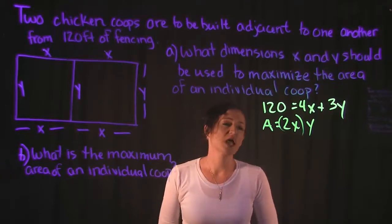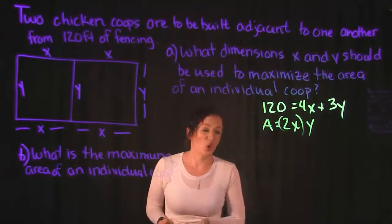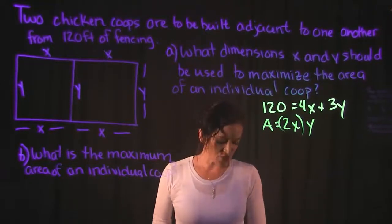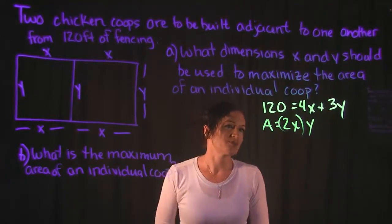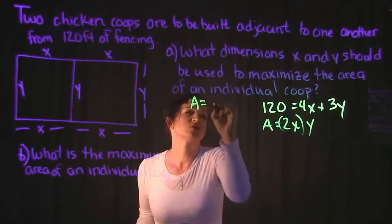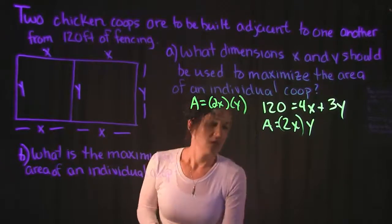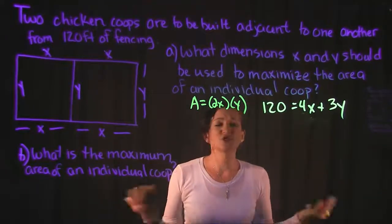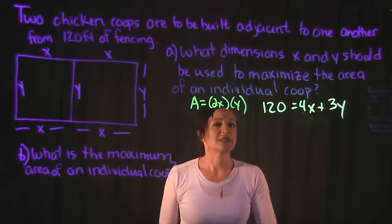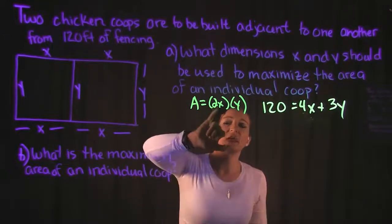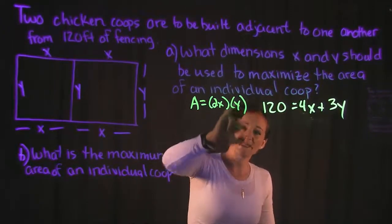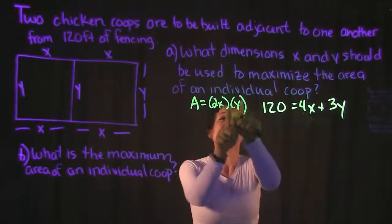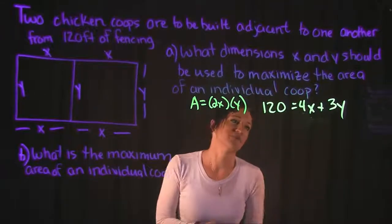Now we're going to do a little algebra and substitution to get an equation we can work with — almost like solving a system, but not quite. I'm going to take the perimeter equation and solve it for Y, since Y appears by itself in the area equation. Then I'll plug that expression for Y into the area formula.